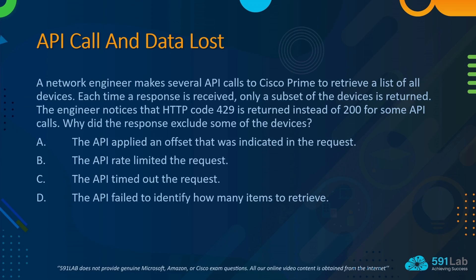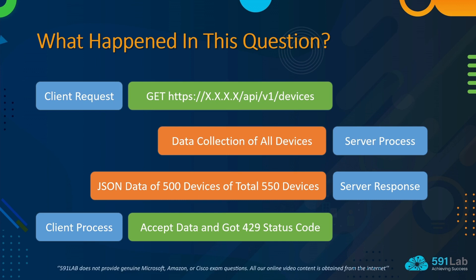Let me tell you some detail about this question. What happened here is a REST API visit, and this is a REST API based on HTTP. In the HTTP scenario, the client will send a GET request to something like /api/v1/devices to get the device list. The server, which is the Cisco Prime API, processes the request parameters and does data collection of all devices.